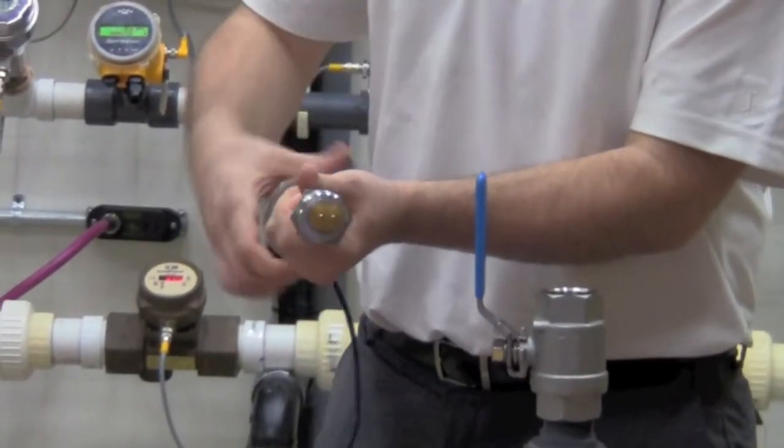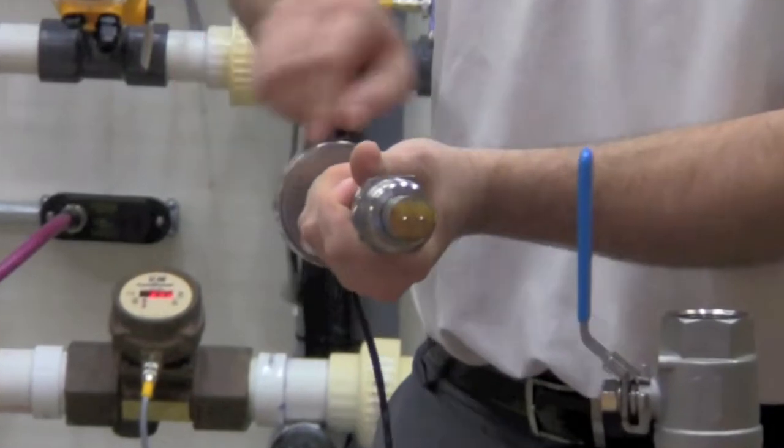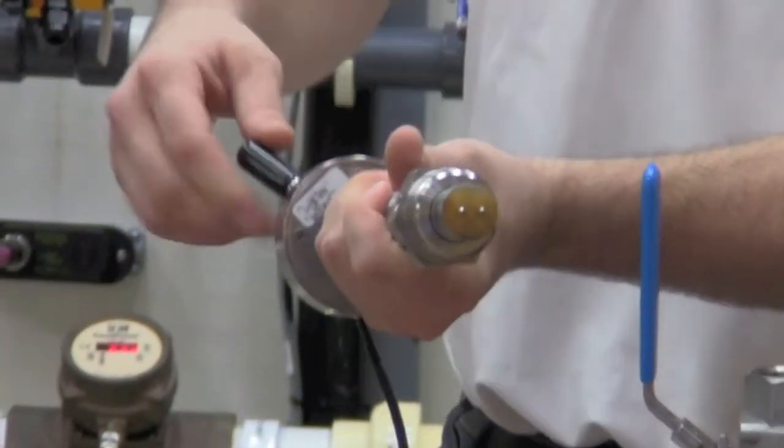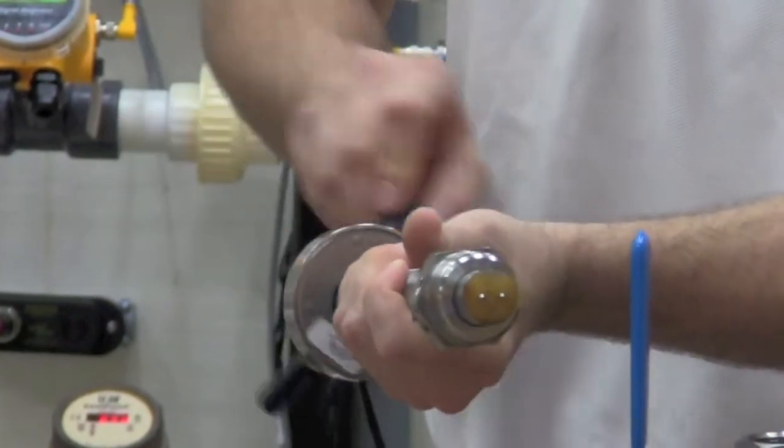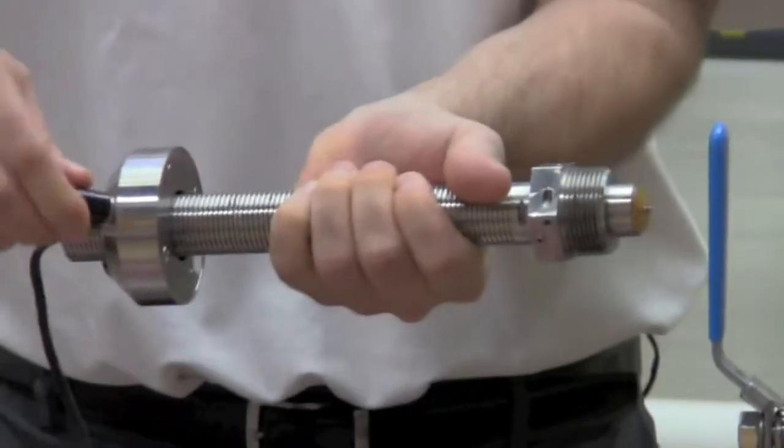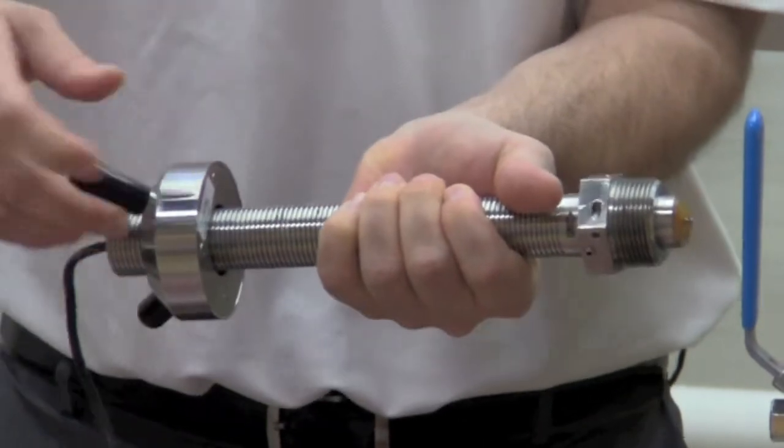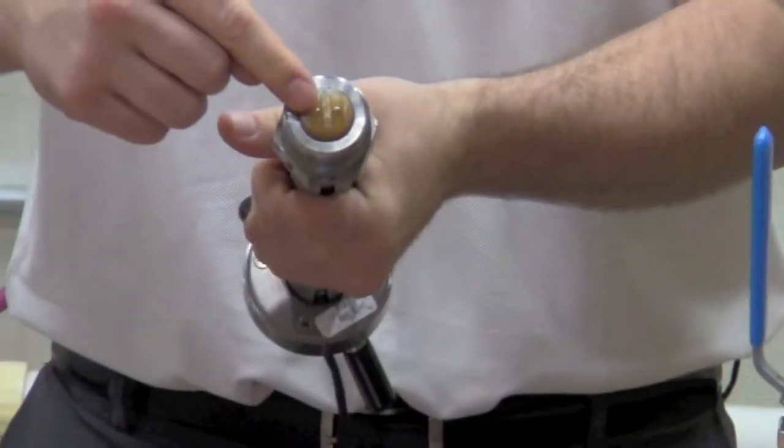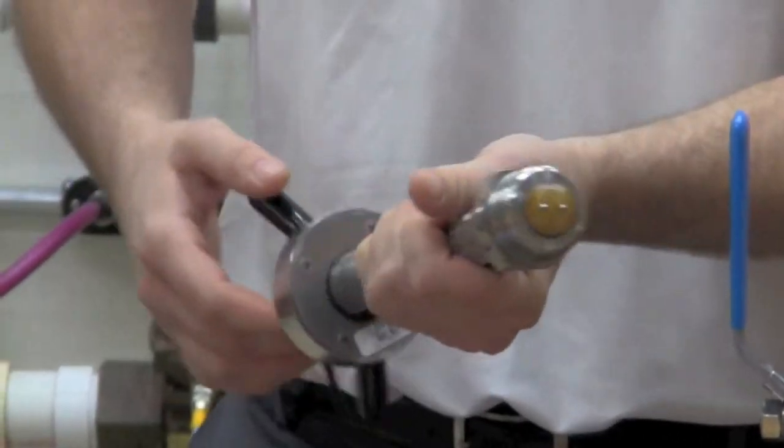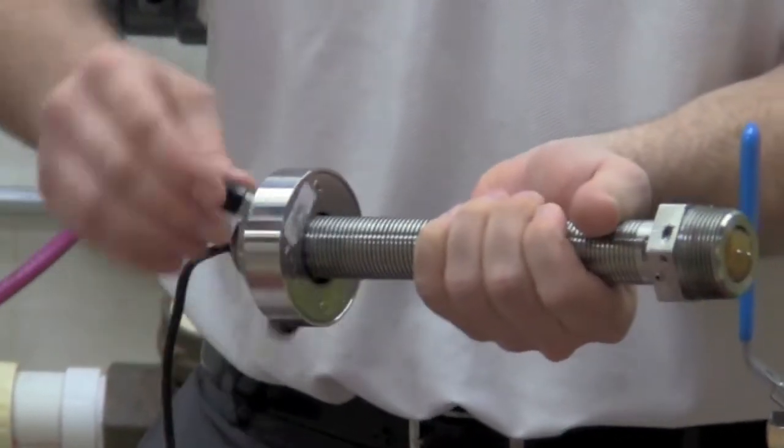The first thing we're going to do is make sure that this is fully retracted. We're going to do this for a couple of reasons. First, it makes it easier to put in. And the second reason is just in case this ball valve is closed for some reason, you don't want to run the electrodes into the ball itself inside the valve.